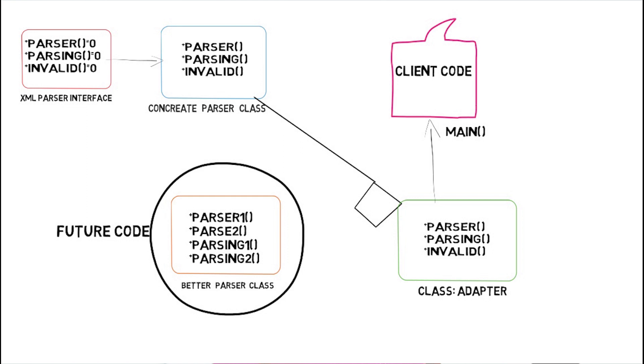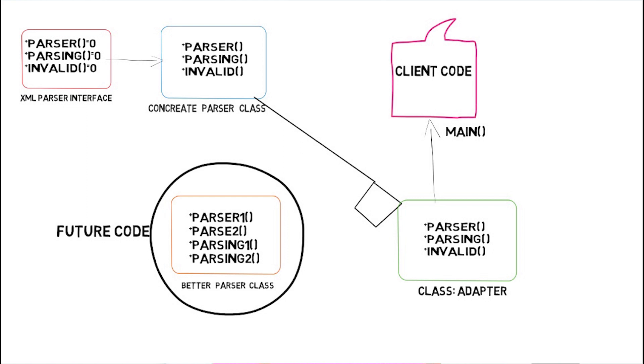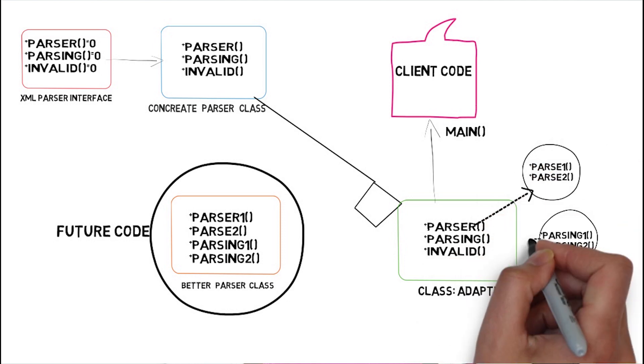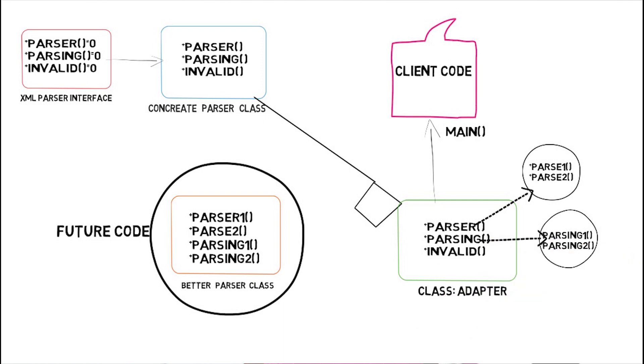As you can see on your screen, I have a better parser class with four functions to parse the XML file: parse one, parse two, parsing one, and parsing two. In the adapter class, parse one and parse two will get called inside the parse function, and parsing one and parsing two will get called inside the parsing function — so the client code will not be impacted. This is the adapter design pattern.